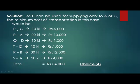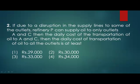So here are the calculations: P will transport 10 kilolitres to C, P will supply 20 kilolitres to A, Q will supply 10 kilolitres to D, T will supply 10 kilolitres to D, R will supply 30 kilolitres to B, and S will supply 20 kilolitres to A. Thus the total comes out to Rs. 34,000, that is choice 4, so our answer is Rs. 34,000.